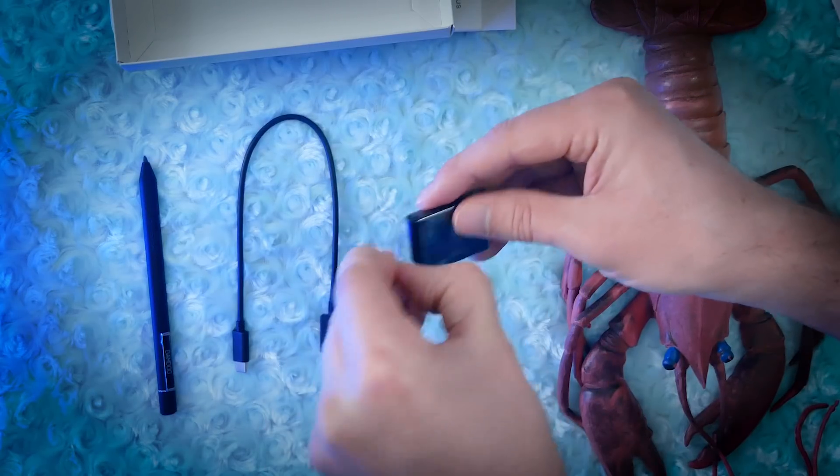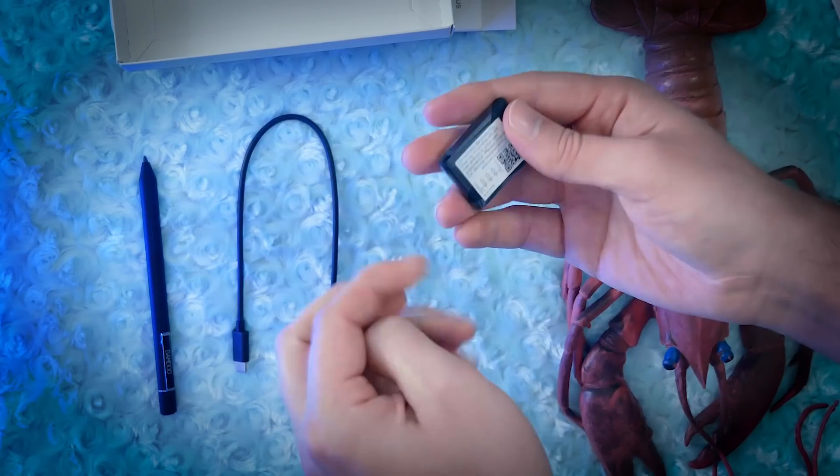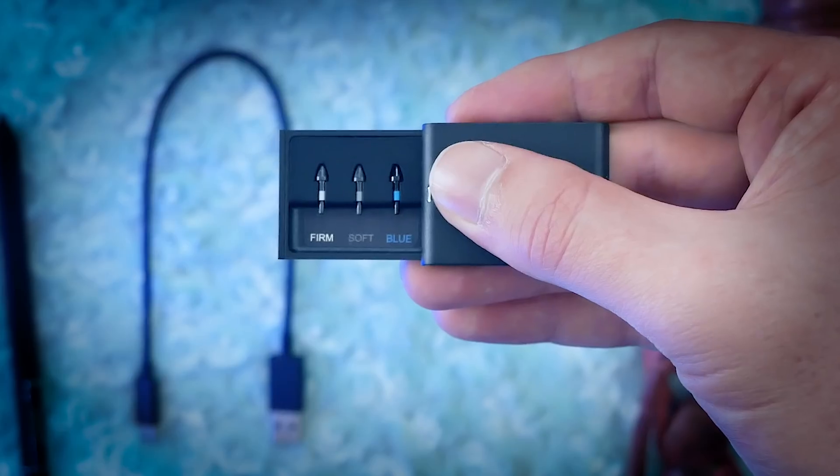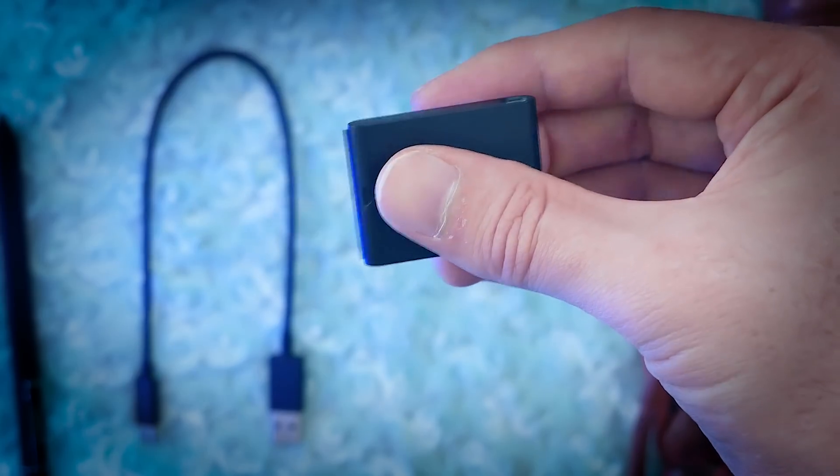It also comes with a few replacement nibs, the nibs are the tip of your pen. They come in this little case. You can slide it open like so, and inside is a firm, a soft, and a blue nib.